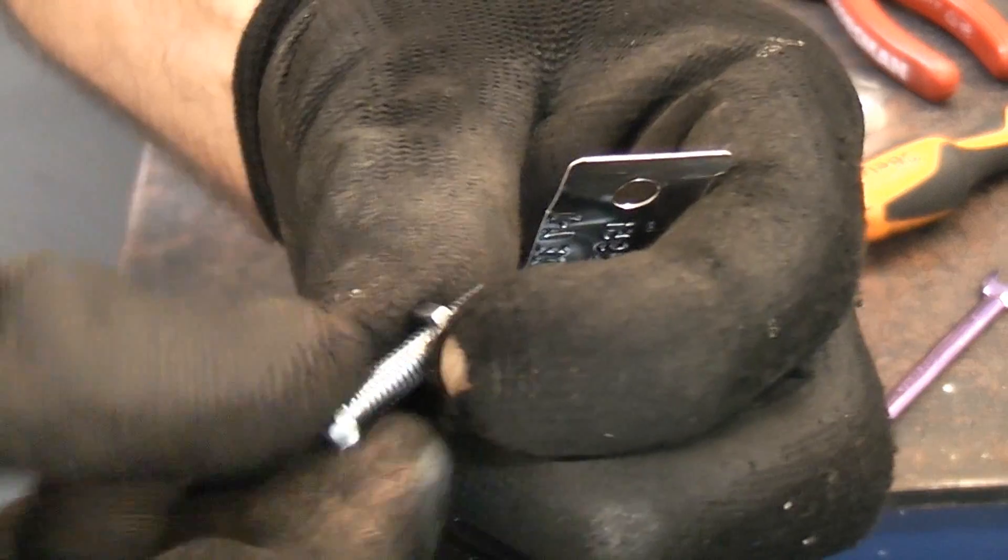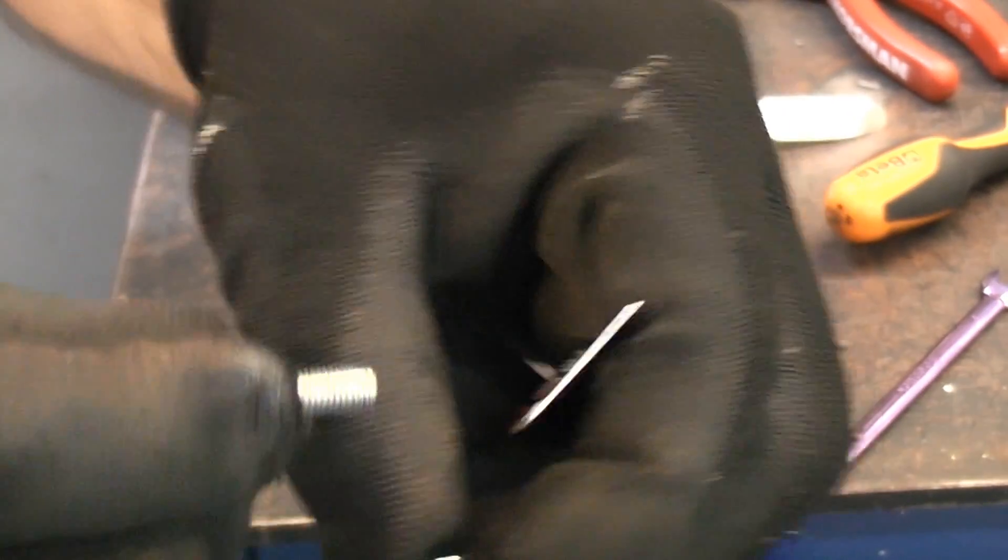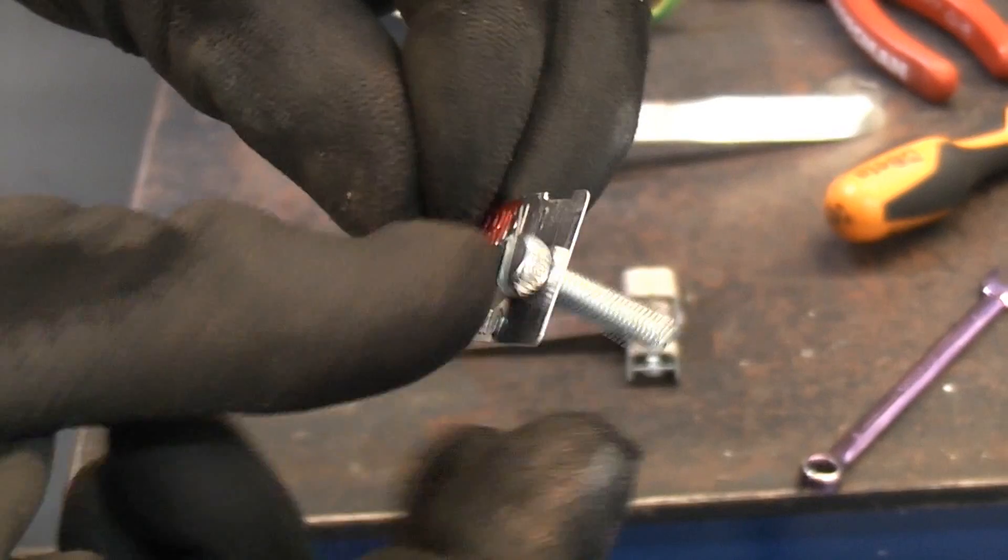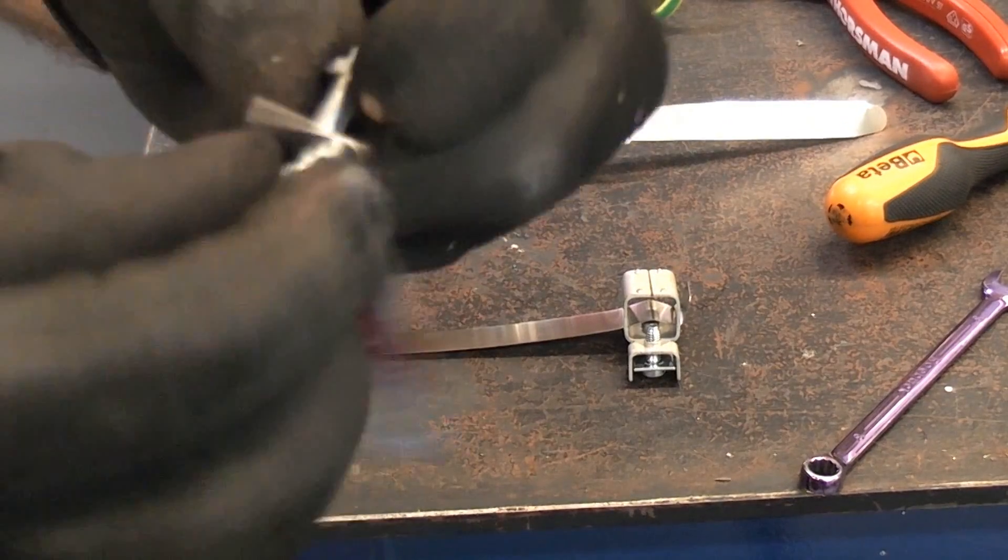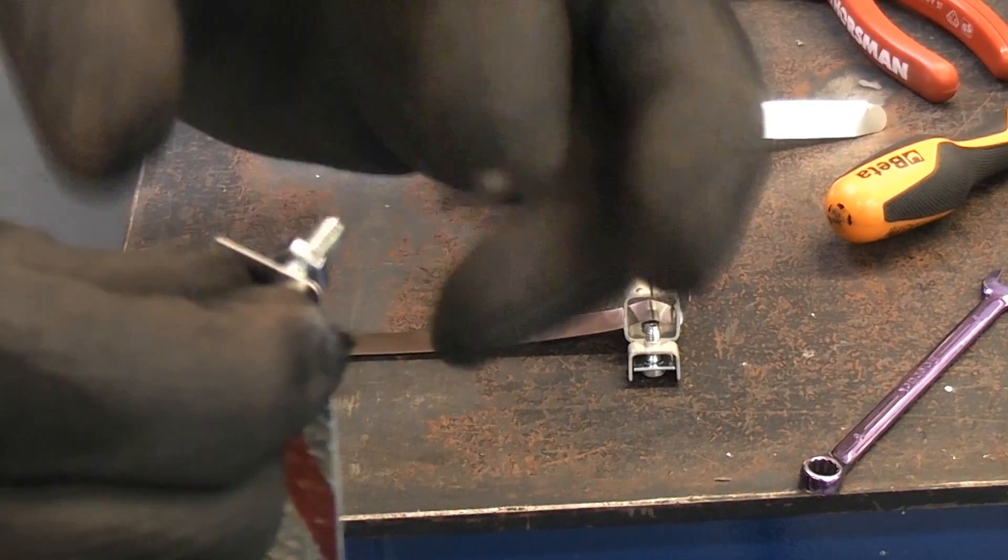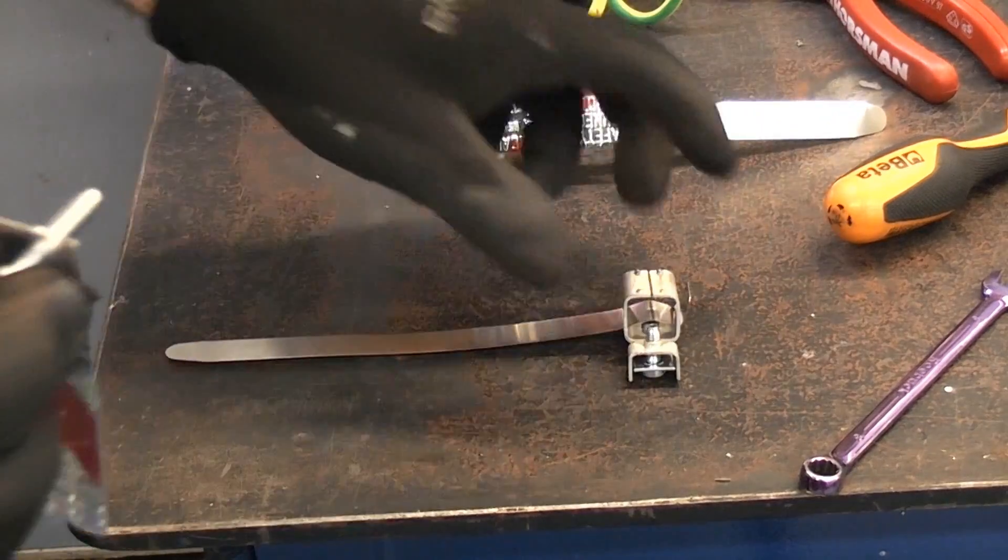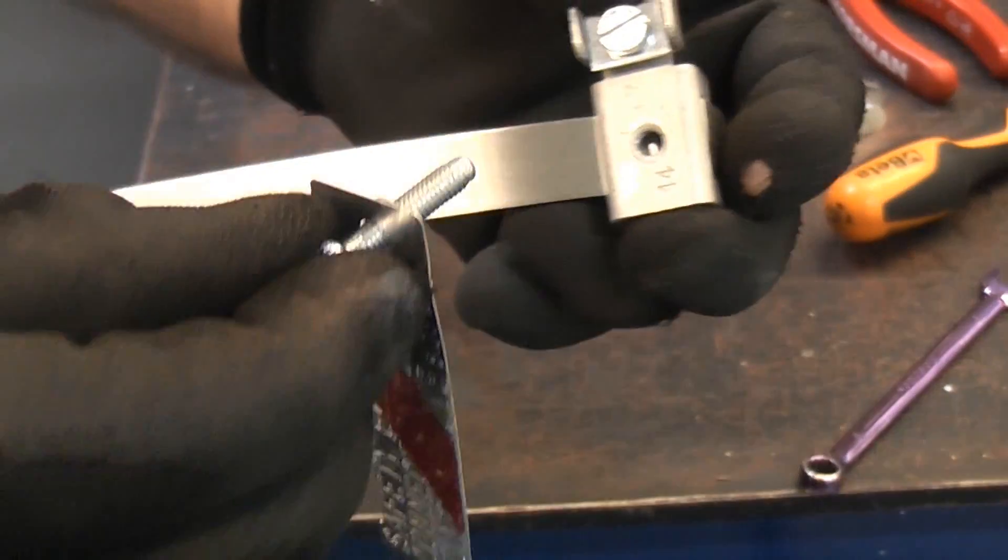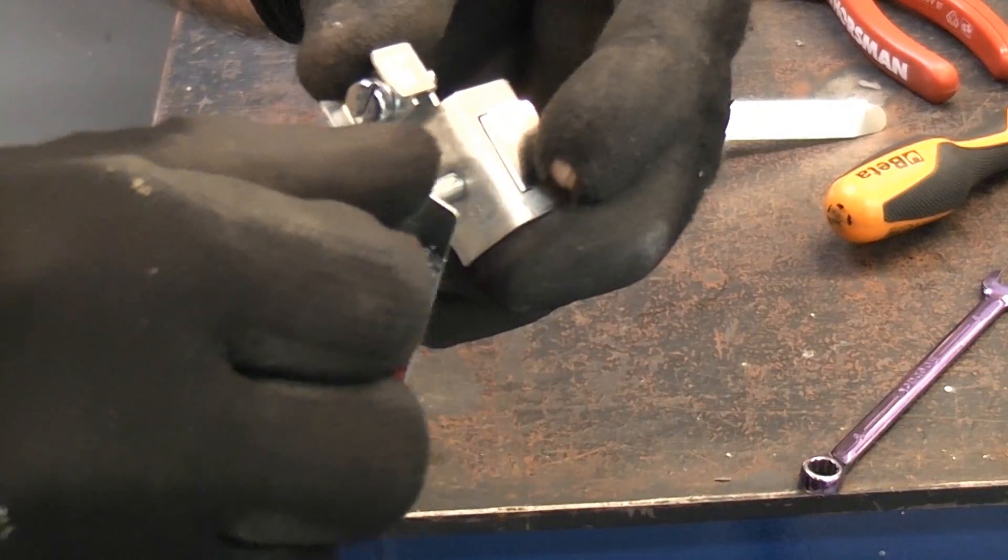What I normally do is remove the nut, pop the screw through the warning label and then put the nut back on, and then we can screw that back into the clamp very loosely.